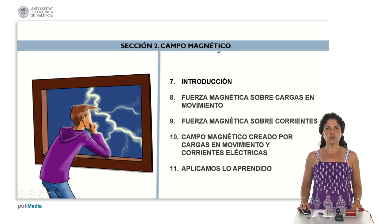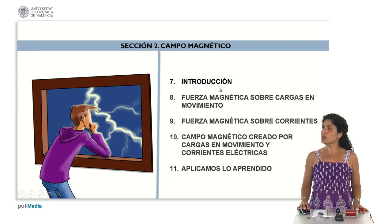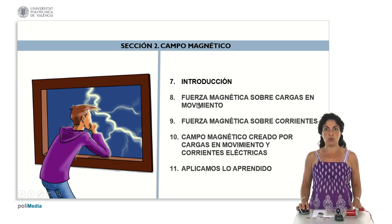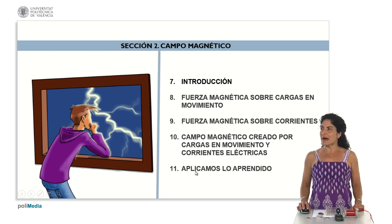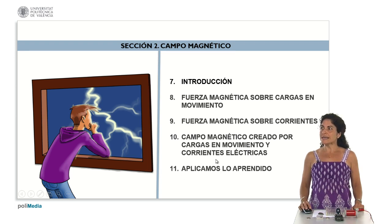In this second section, we're going to go through the study of the magnetic field over five topics. First, an introductory topic where we will analyze the sources of the magnetic field. We will then analyze the magnetic force acting on charges in motion within a space where a magnetic field has been defined, followed by magnetic forces on currents, how to calculate the magnetic field created by moving charges and electric currents, and finally a visual demonstration applying everything we've learned. Starting with the first lesson of this magnetic field.